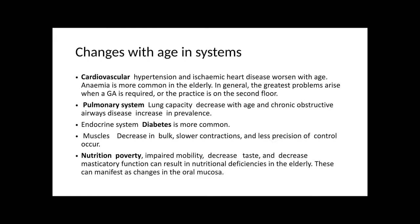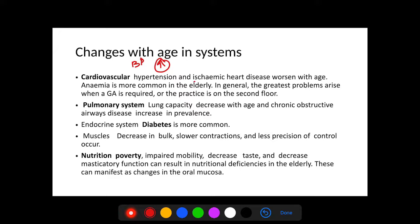Systemically, as the patient ages, we see increased hypertension and worsening ischemic heart disease — important considerations when planning general anesthesia or if the practice is on a higher floor. Anemia is also common in the elderly. The lung capacity decreases with age and chronic obstructive diseases become more common. In the endocrine system, diabetes becomes more prevalent. In the musculature, there is decreased bulk, slower contractions, and less precision of control.